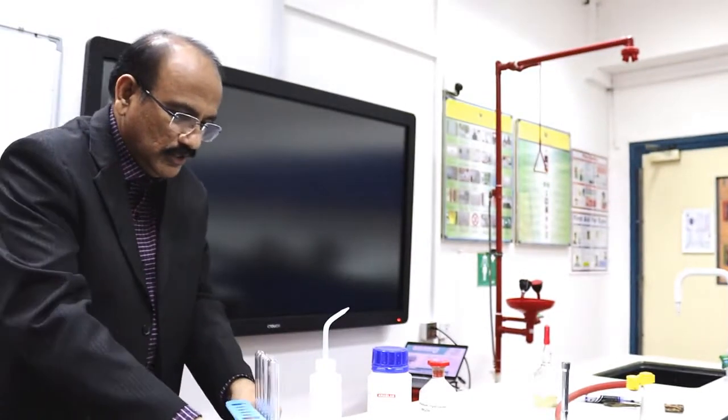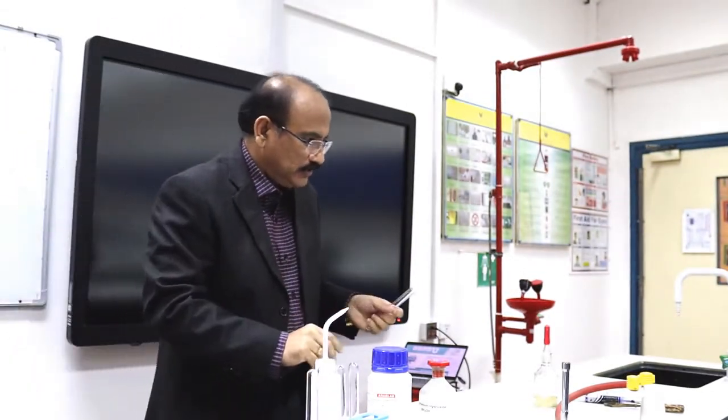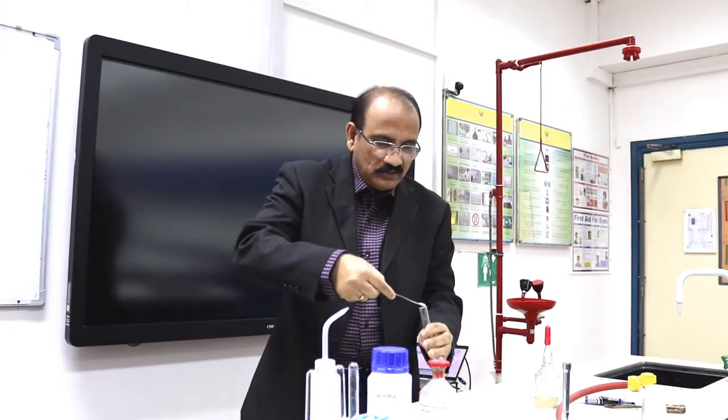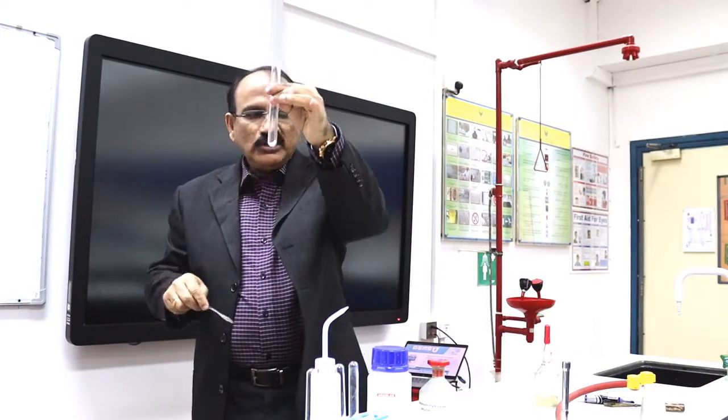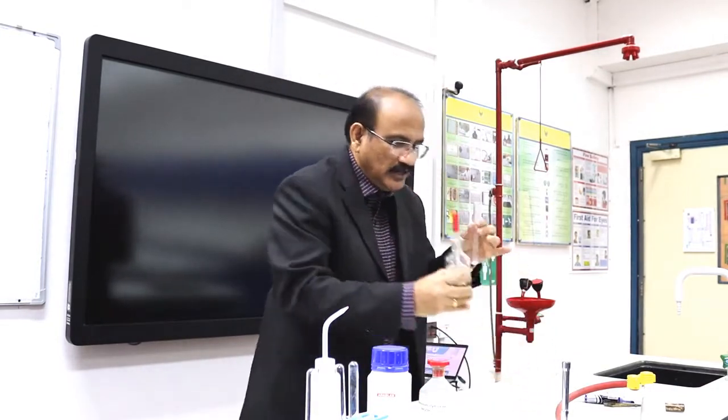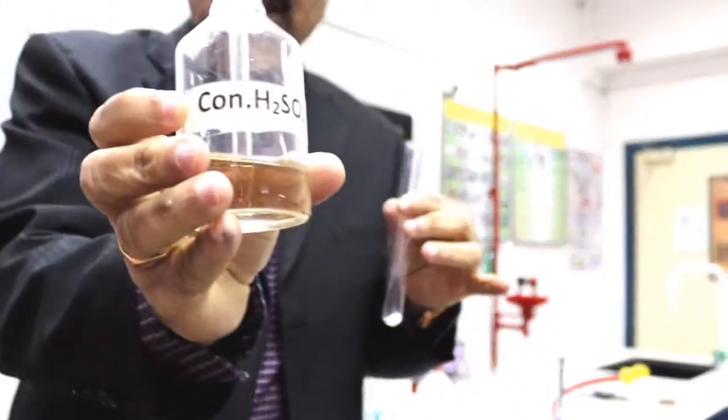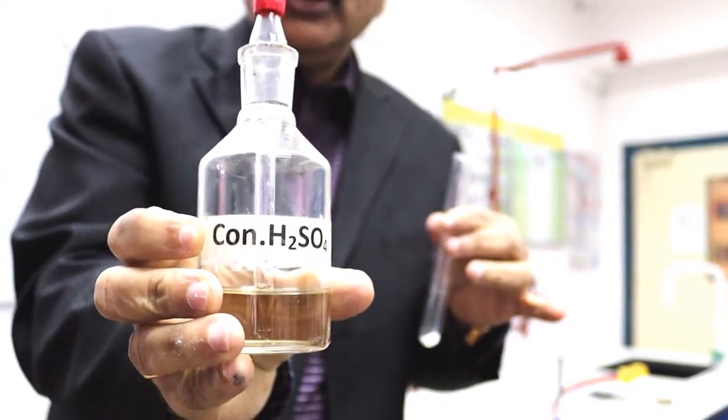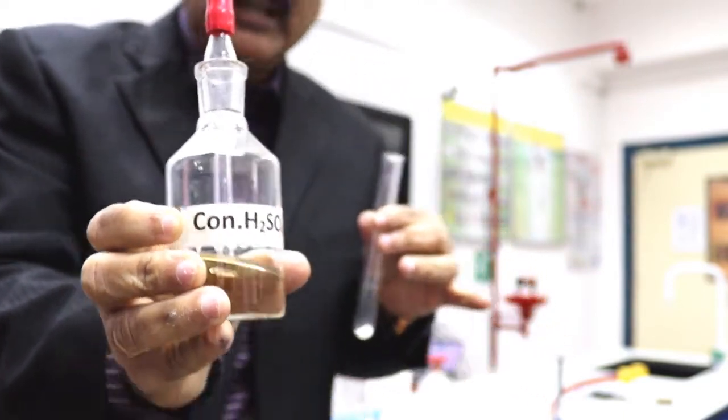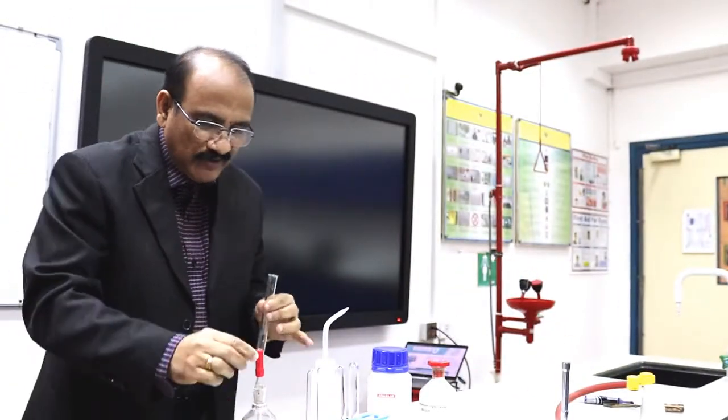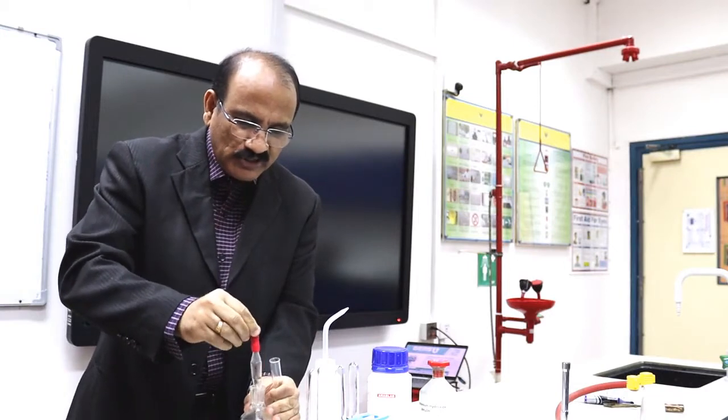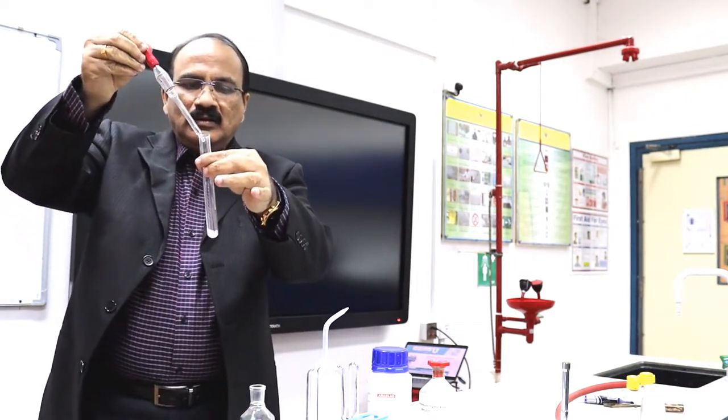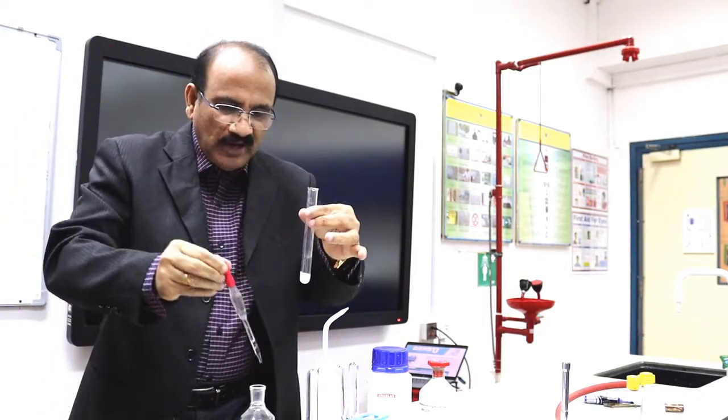Take a dry test tube and put the salt, the given salt into that. This salt is put, and I will add concentrated sulfuric acid. This is very corrosive, so take care. Concentrated sulfuric acid should be handled with care. So I will use a filler for that. I will take concentrated sulfuric acid and I will add. Let's see what will happen. A little more I will add.